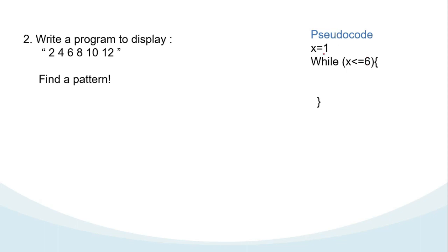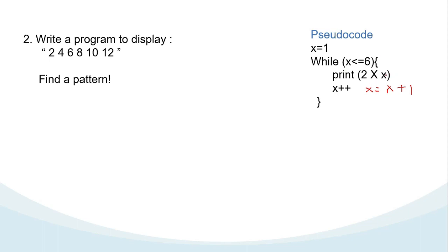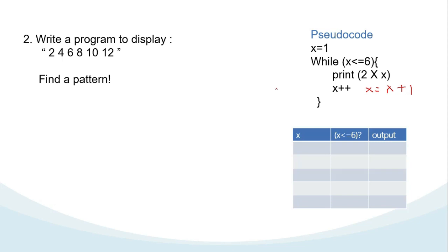To make x reach 6 from 1 we need an increment, so x = x + 1. After that, you need to think about the code to display. You already found a pattern by multiplying each number by 2. So we can write the code as 2 times x, because 1, 2, 3 will be inside x. To make it clearer, let's see the tracing table.